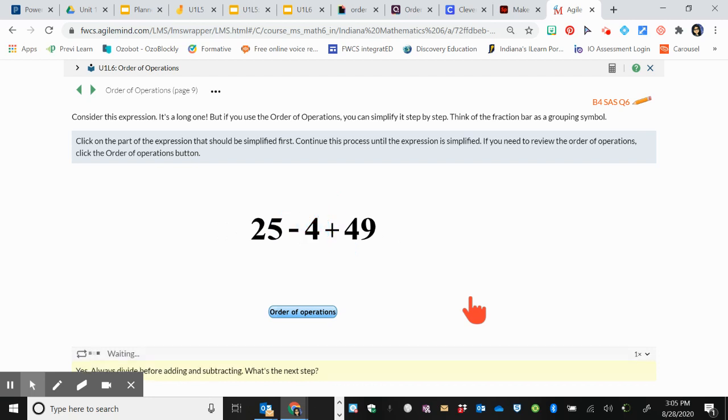Now I'm going to add and subtract left to right as I see it. I see 25 minus 4 first. 21. So 21 plus 49 is my last step. 70.